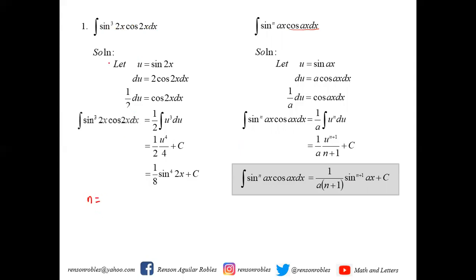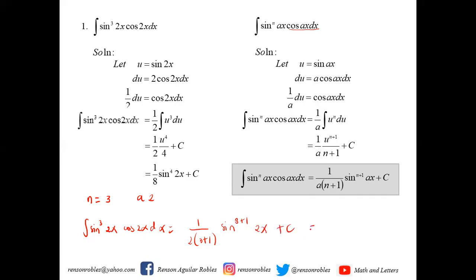Here n equals 3 and a equals 2. Applying the formula, the integral of sine cubed 2x cosine 2x dx equals 1 over [a times (n+1)] times sine to the n+1 of ax plus c. So 3+1 is 4, times 2 is 8, giving us 1/8 times sine to the 4th of 2x plus c — and we get the same answer as before.